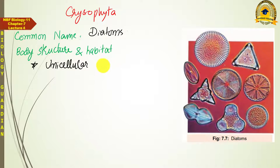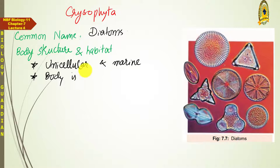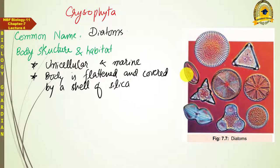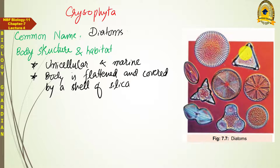Diatoms are marine organisms found in the sea, and as we will see in their significance, they are the largest group of producers. Their body is flattened and covered by a shell of silica — an additional shell. Due to this silica shell, their body looks very transparent, resembling a petri plate — circular from above and flattened from the side. Some forms also have star-shaped or triangular bodies.